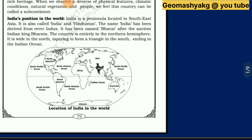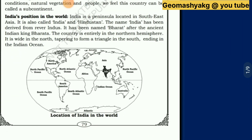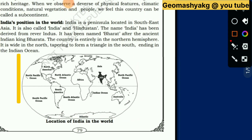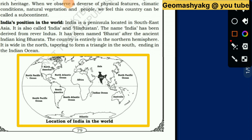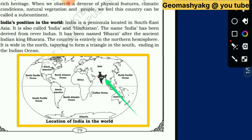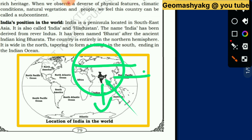See, dear students, here is the map of India and the map of the world. India's position can be seen very easily here. In this world map, India is here, located in South Asia. This is Asia — in this Asia, this is the south direction and this is the east direction. It is located in Southeast Asia.